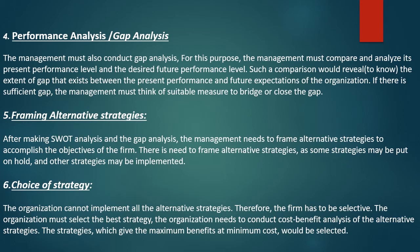Sixth: choice of strategy. The organization cannot implement all alternative strategies, therefore the firm has to be selective. The organization must select the best strategy by conducting a cost-benefit analysis of the alternative strategies. The strategy which gives the maximum benefit at minimum cost should be selected. The sixth step is the choice of strategy.